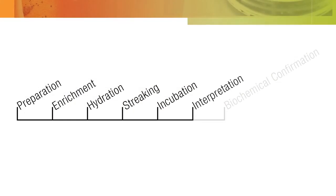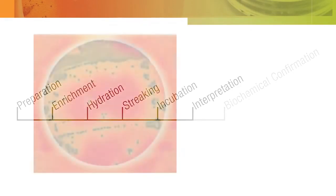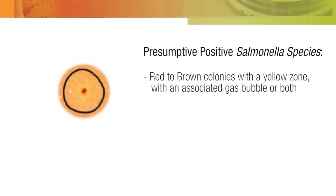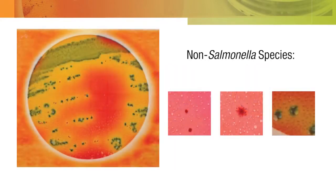The next step in testing is interpretation for presumptive positive salmonella colonies. Now look at the isolated colonies for salmonella species. Presumptive positive salmonella species are red to brown colonies with a yellow zone with an associated gas bubble or both. An associated gas bubble is defined as being located within one colony diameter distance from the colony. All other colony colors and types are non-salmonella species.